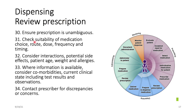The next step is dispensing, which is the pharmacist's responsibility. The first step is to review the prescription: ensure the prescription is unambiguous, check suitability, dose, frequency, and timing. Consider interactions, patient comorbidities, and clinical status. If the doctor has recommended a dose adjustment due to renal or liver function, the pharmacist should contact the prescriber if there are any discrepancies.